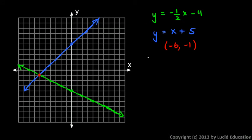Okay, let's check that. If that is in fact the solution to the system, then those x, y values should work in each of those equations. So let's do the first one here. We're going to put in negative 1 for y, equals negative 1 half times x, which is negative 6, minus 4. Now is that true? Let's see. Negative 1 equals, what is this? Negative 1 half times negative 6, well, that will be positive 3, minus 4. And look, that works. Negative 1 is, in fact, 3 minus 4.